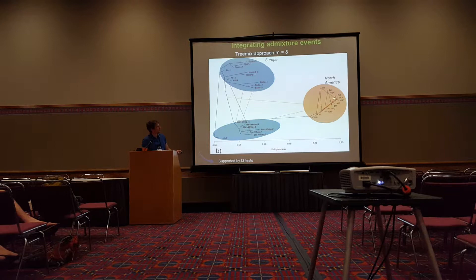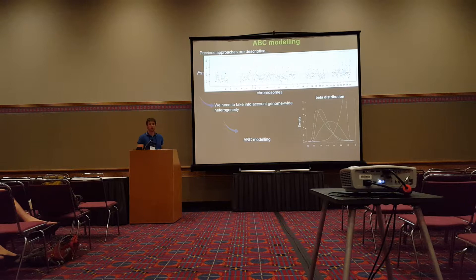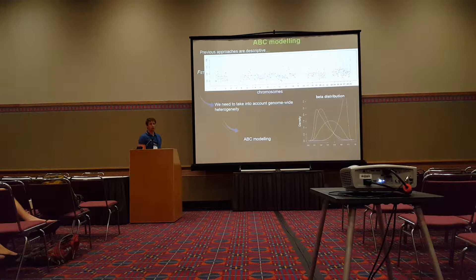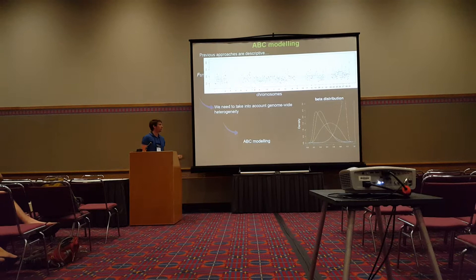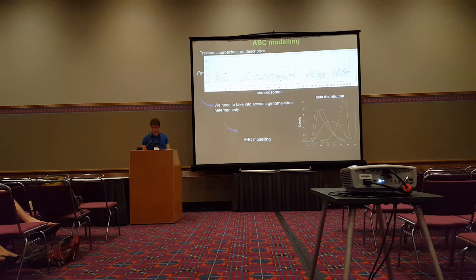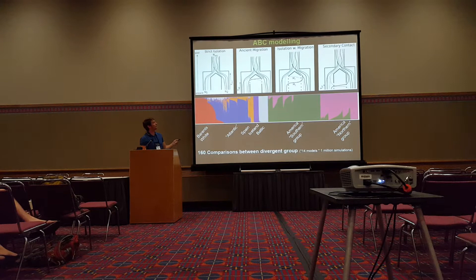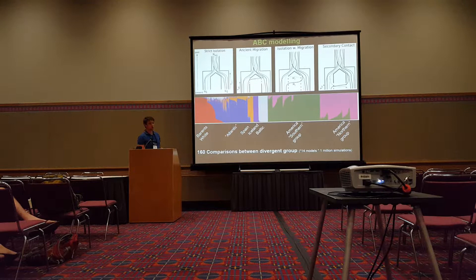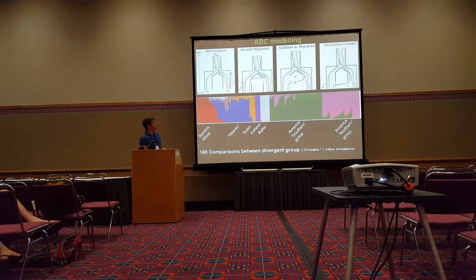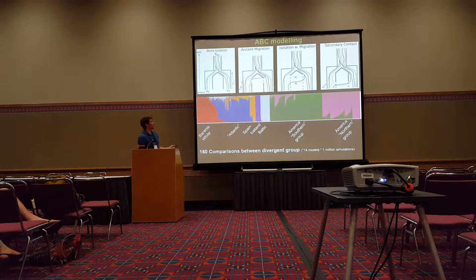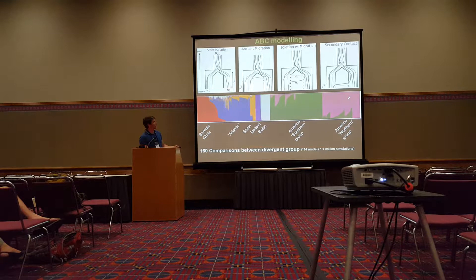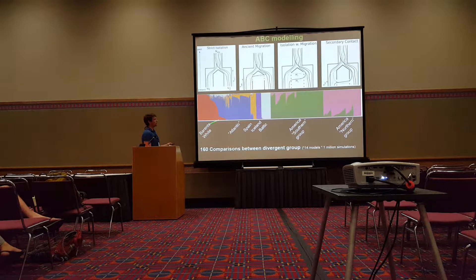These results are still descriptive and we haven't fully solved the demographic history of populations. So we want to take into account the heterogeneity of differentiation, and I do that using an ABC framework. I won't have time to explain the details, but feel free to ask questions. I compared these four major demographic models using the genetic structure inferred previously — comparing models between America and Europe, and within Europe and within America — resulting in more than 160 comparisons to represent the global demographic history.